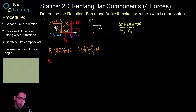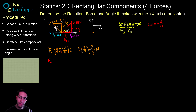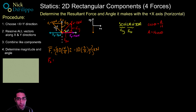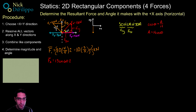The angle is 60 degrees and the hypotenuse is 13 kilonewtons. So F2x = 13 cos(60°) i and F2y = 13 sin(60°) j, giving F2 = 6.5i + 11.3j kilonewtons.